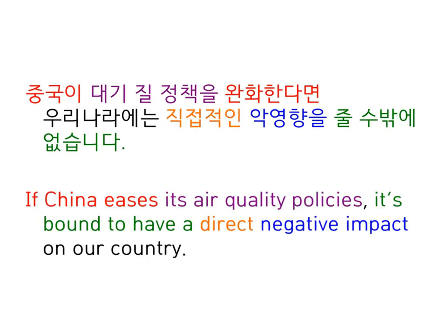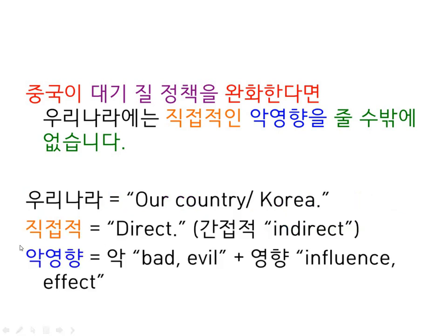If China eases its air quality policies, it's bound to have a direct negative impact on our country. In the previous sentence we had the construction 영향을 주다, which literally means to give an influence or impact to, but we translate it in English as 'to have an impact on.' Here it's the same structure except with 악 tacked on to the start of the word, which means bad or evil. So it's a negative influence or impact.